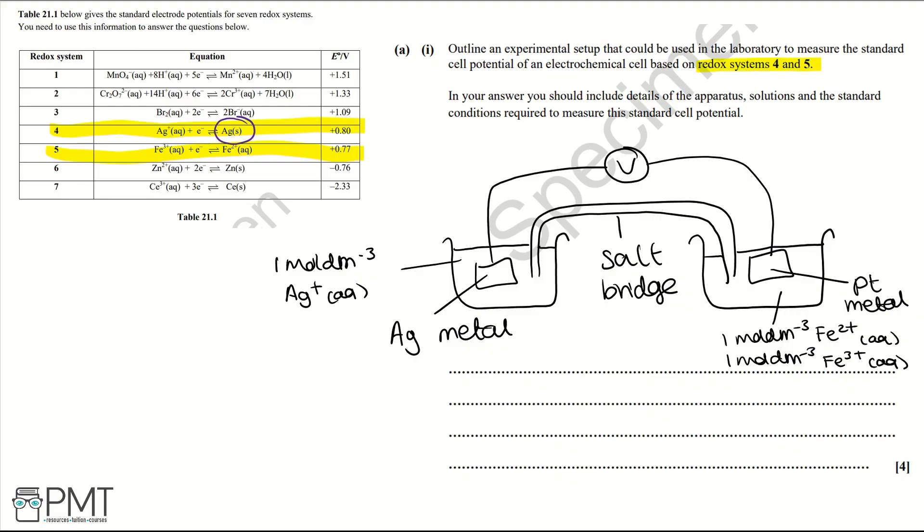Finally, the last bit of the question is asking us to comment on the standard conditions required, and the standard conditions are going to be 298 Kelvin and 100 kilopascals. To get the four marks for this question you must have both cells or half cells correct for one mark each, a complete circuit with a voltmeter and salt bridge for the third mark, and correctly stating the standard conditions for your fourth mark.